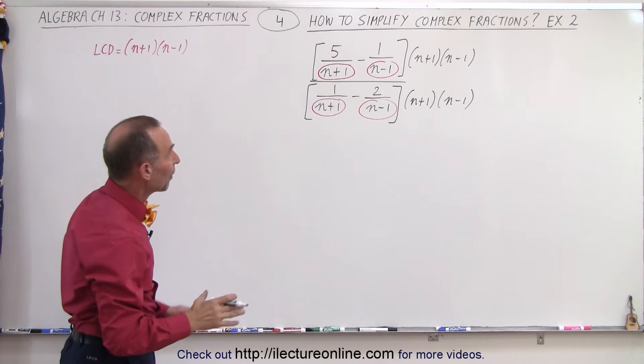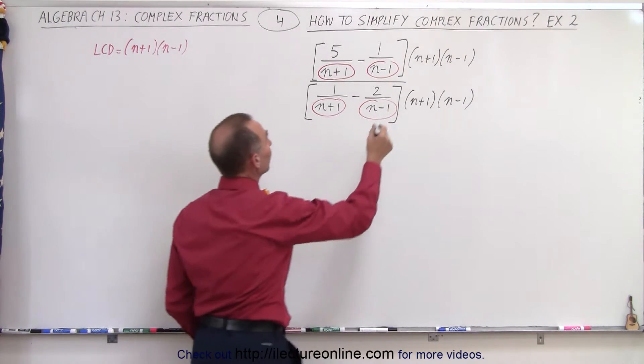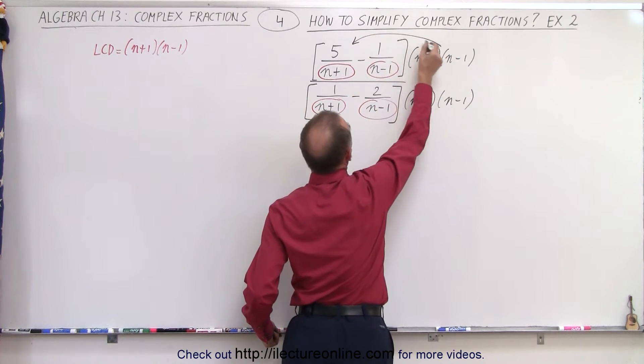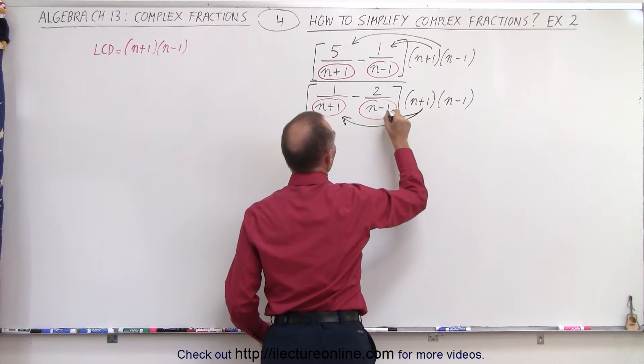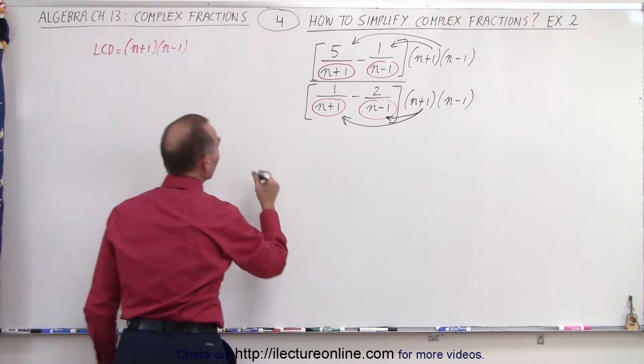So how do we do that? Well, first of all, let's go ahead and multiply everything through. We're going to multiply this by the first fraction and with the second fraction, same over here, first fraction and second fraction. When we do that, we get the following.